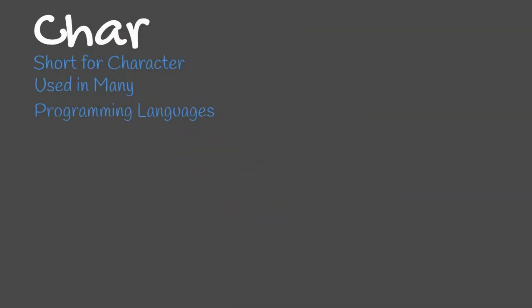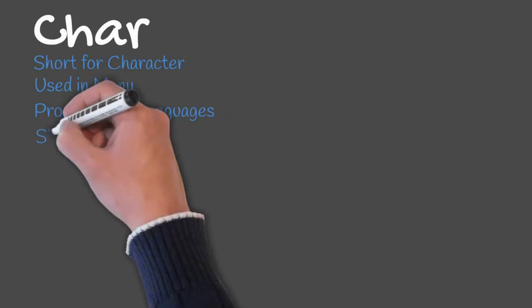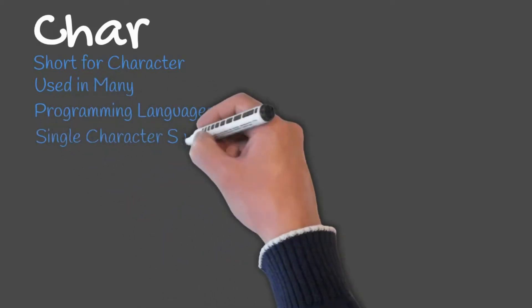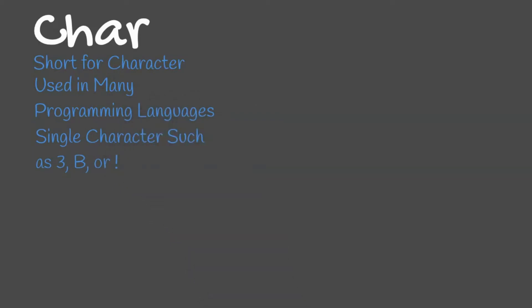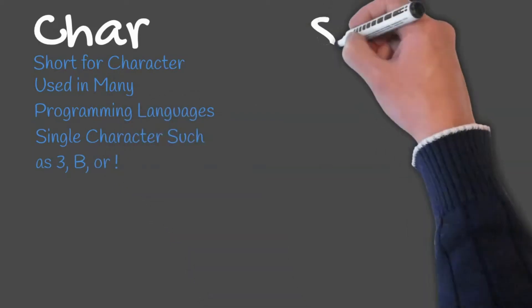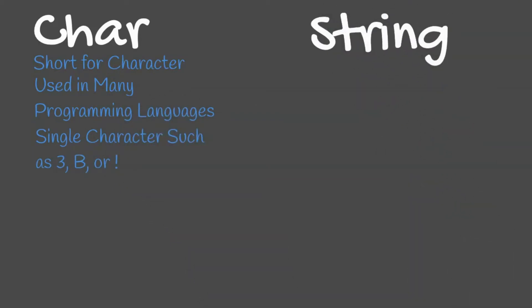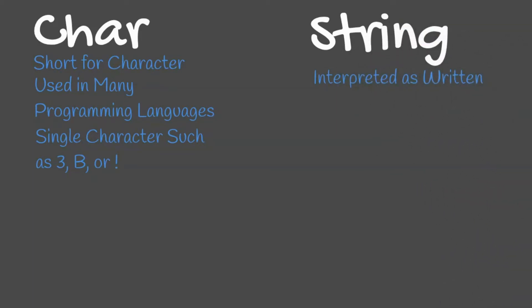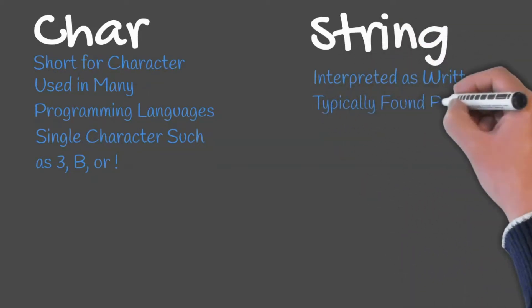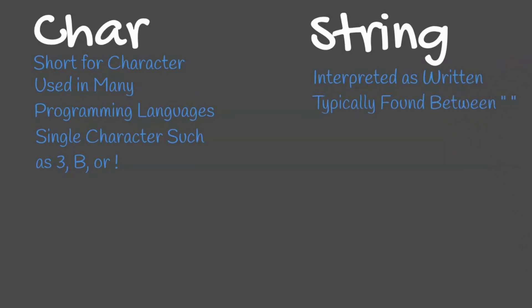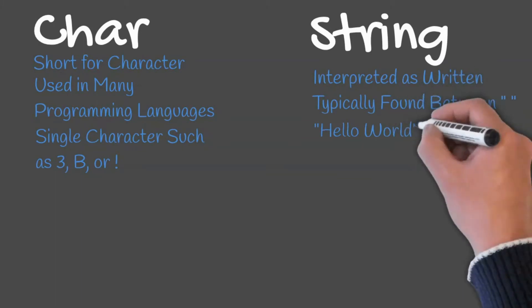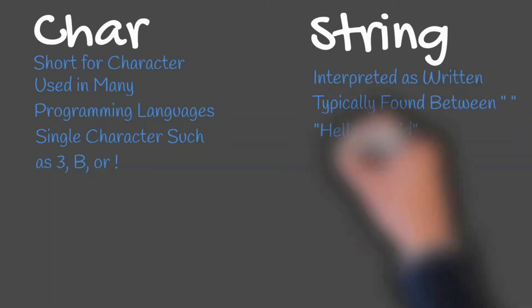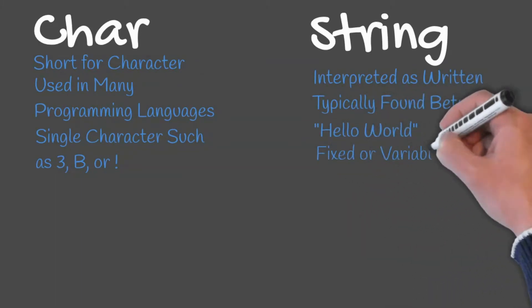Char is used in a variety of programming languages and refers to a single character. Examples include '3', 'B', or the exclamation mark. A string is a set of characters interpreted as written by a programming language. A string is typically found between quotation marks — an example would be "Hello World".